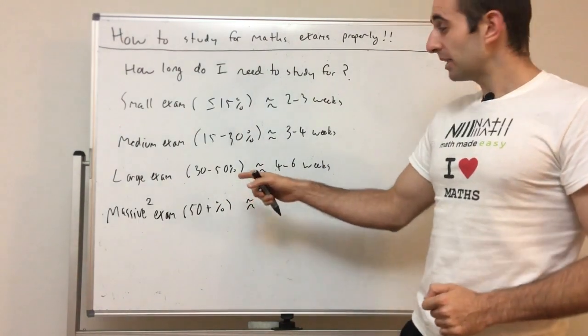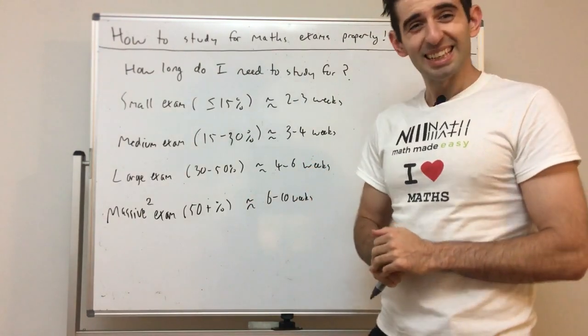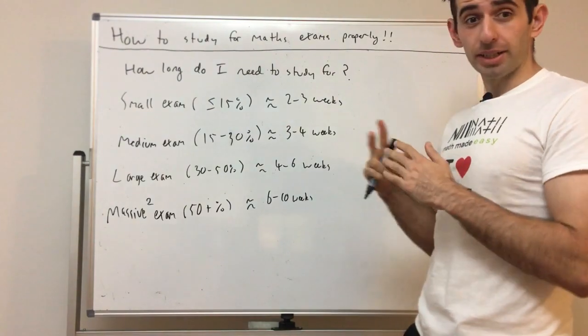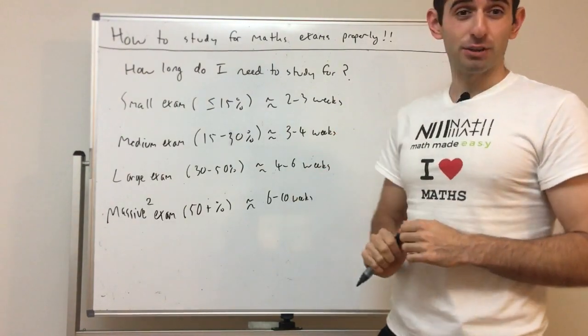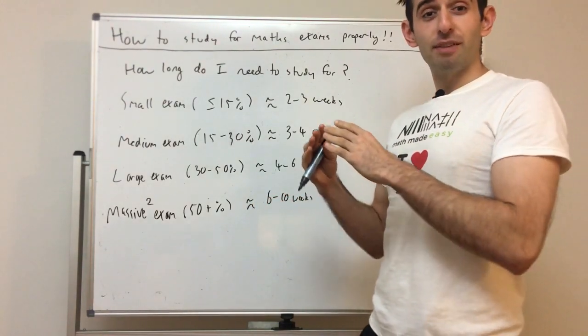One more type of exam - a massive squared exam. That's just a little joke. 50 plus percent, something that's worth over half your grade for the whole semester or a year. You're going to need a huge amount of time to study for that - six to ten weeks at least. I'm actually going to have to make a separate video on how to study for university final exams.